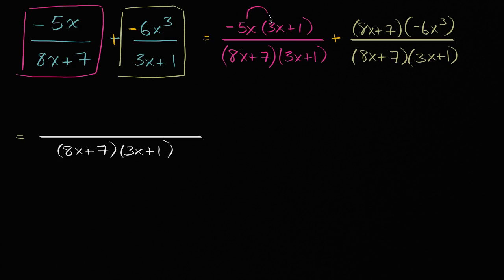Now in the magenta I would want to distribute the negative 5x. So negative 5x times positive 3x is negative 15x squared. And then negative 5x times 1 is minus 5x. And then in the green I would have, let's see I'll distribute the negative 6x to the third power. So negative 6x to the third times positive 8x is going to be negative 48x to the fourth power. And then negative 6x to the third times positive 7 is going to be negative 42x to the third.